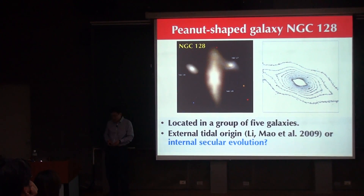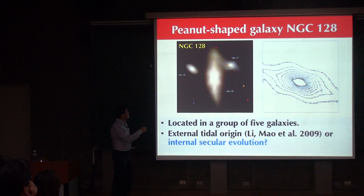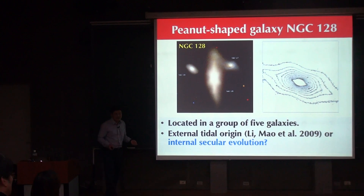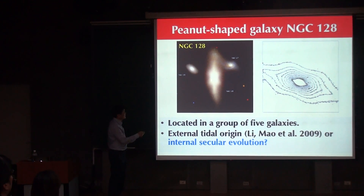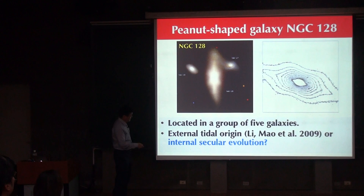It turns out the answer is most likely that bar galaxies formed by internal processes. The reason is that if you count the number of close pairs around bar galaxies compared to non-bar galaxies, you don't see much difference. So pairs, whether present or not, are not very important for forming bars within spiral galaxies. Internal secular dynamical evolution processes are likely the reason why we see so many bar galaxies in the universe.